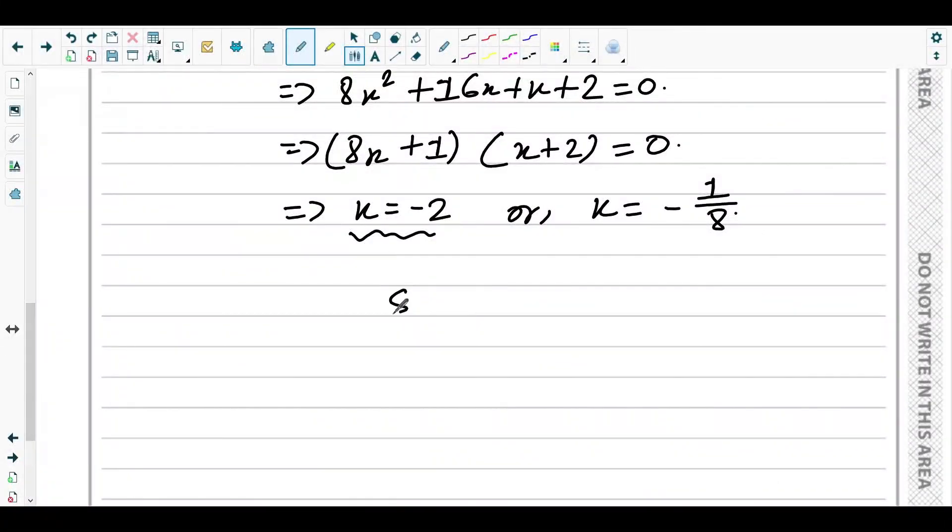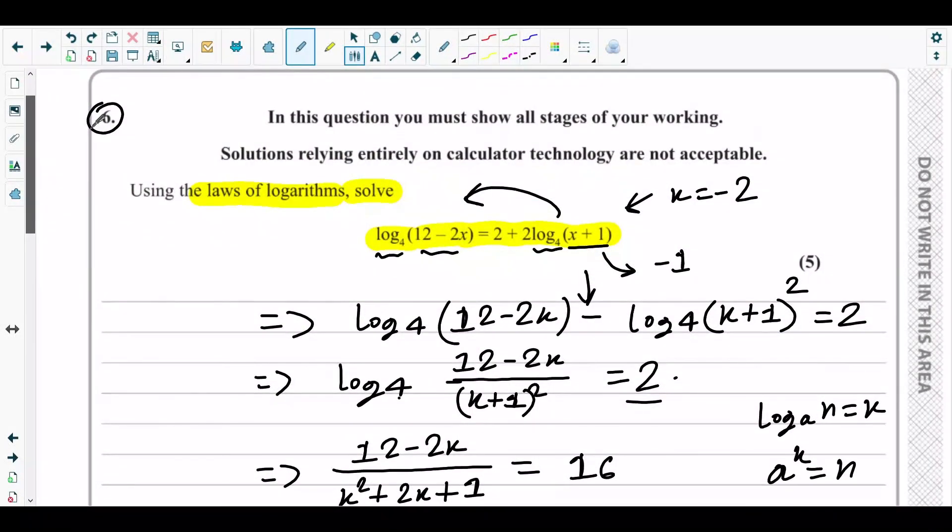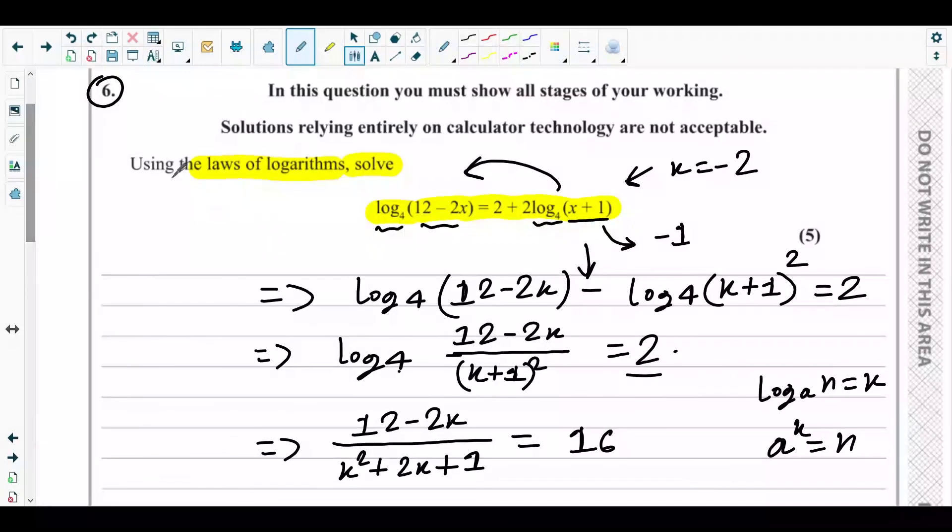So the final answer should be x = -1/8. The solution to the given logarithmic equation is -1/8, and that's what question number 6 has asked for.